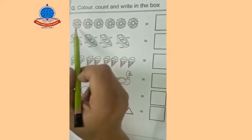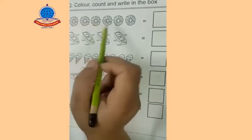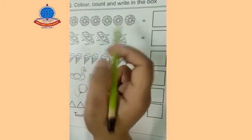We have flowers. Let's count with me: 1, 2, 3, 4, 5, 6. We have six flowers. Write here number six.